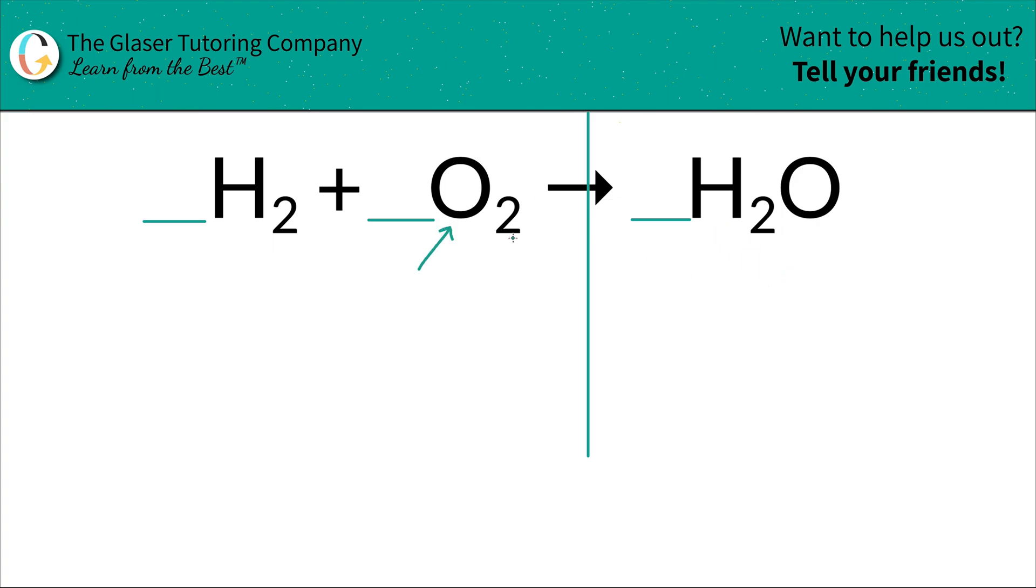Next step is to look at the oxygen. On the left-hand side, we have two oxygens. However, on the right-hand side, we only have one. Remember, if there's not a subscript, it is assumed to be one. So the oxygen is not balanced. If you have two on the left and only one on the right, we need to place a coefficient of two here in order to balance it.